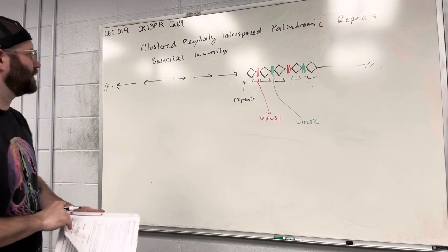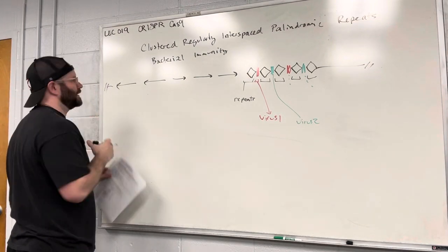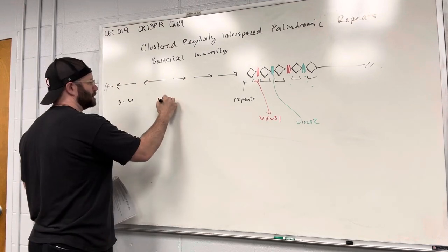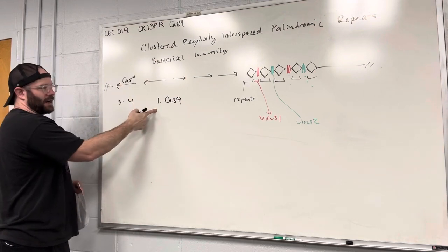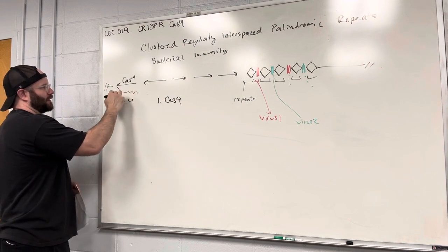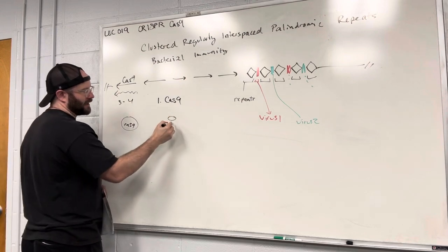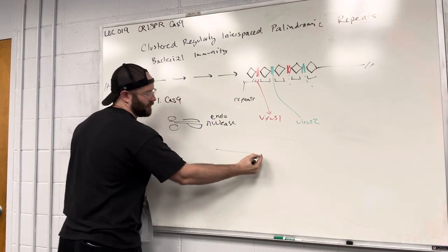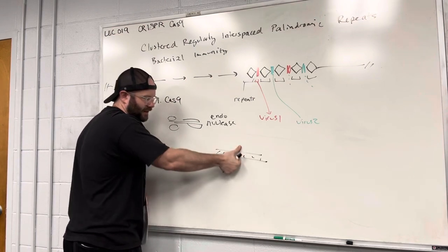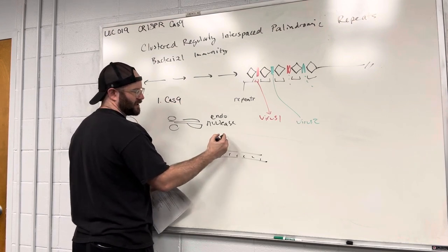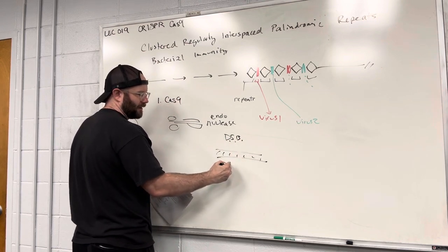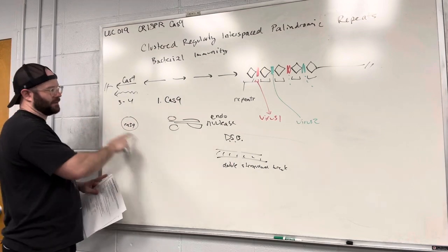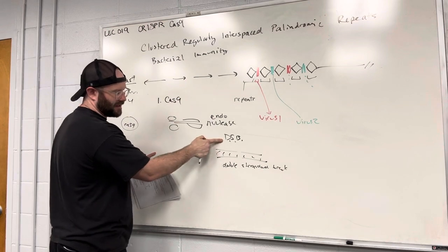Now let's go through some key pieces of the system. There are three to four key pieces. One is Cas9 — that's the name of a gene. Cas9 codes for messenger RNA that is translated into a protein called Cas9. Cas9 is a nuclease — specifically an endonuclease. Exonucleases cut on the outside; endonucleases cut inside a DNA molecule, creating what's called a DSB — a double-stranded break. That's one key piece of the system: Cas9 is a nuclease that causes double-stranded breaks.